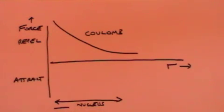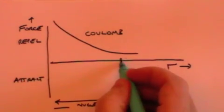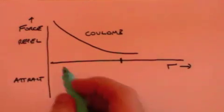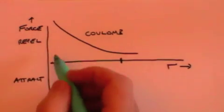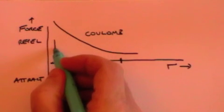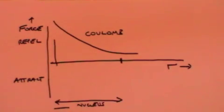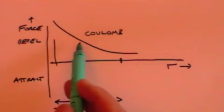We can also assume that the nuclear force must itself become repulsive when the two protons are touching. Otherwise, the two protons would be forced to merge together. Finally, we know that the nuclear force must be significantly greater than the Coulomb force over the range of the nucleus.